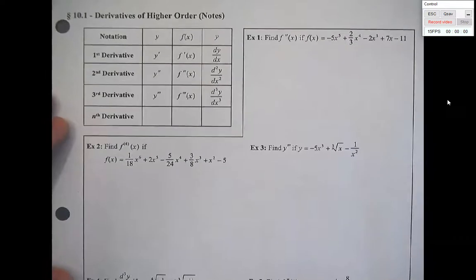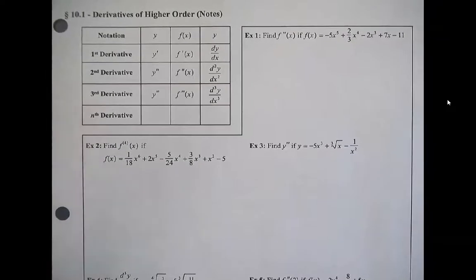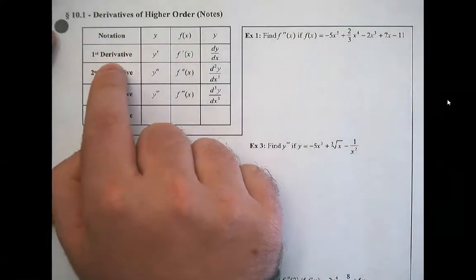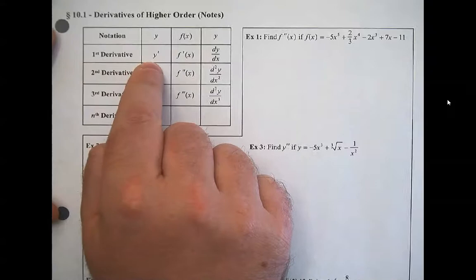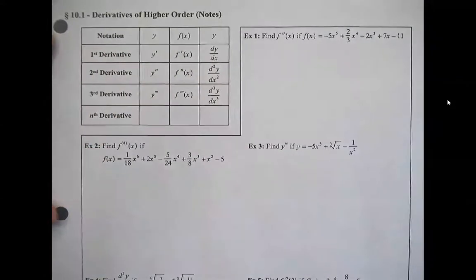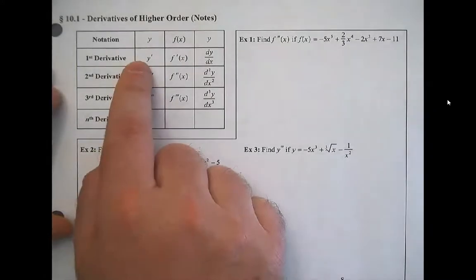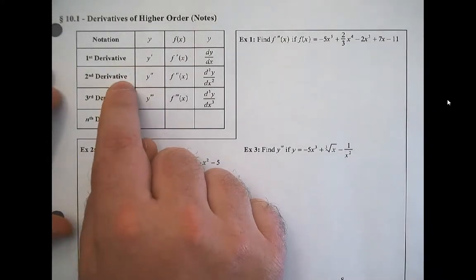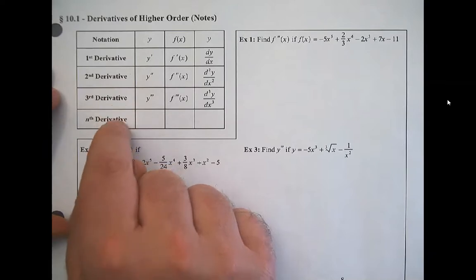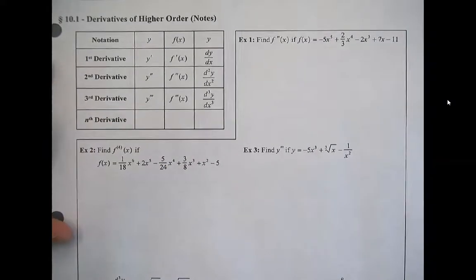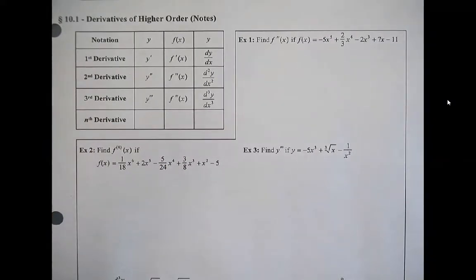Today's topic is derivatives of higher order, which means you're taking the derivative of a derivative. We have the first derivative, which we worked on last unit using the power rule. Then the derivative of the derivative is called the second derivative, and the derivative of that is called the third derivative — and you can keep going from there to whatever order you want to calculate.